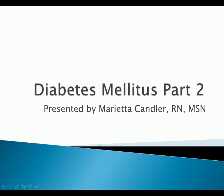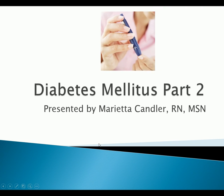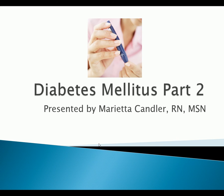This is part two on diabetes. It has come a long way from what it used to be. Research supports that to keep you from getting those macro and micro complications, if you keep your blood sugars within normal limits for a diabetic — keeping that hemoglobin A1c below 7% and cholesterol levels controlled — those micro and macro complications can actually be prevented. So let's go over etiology again.